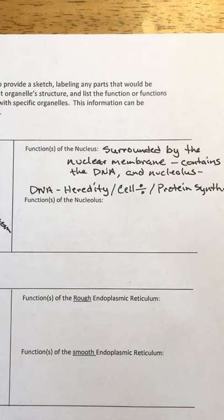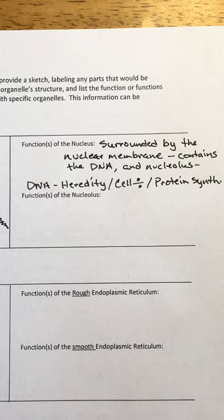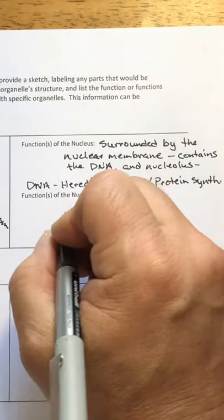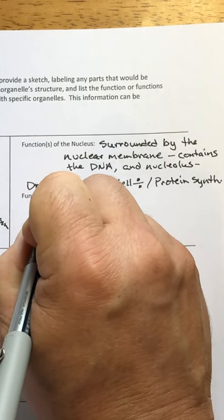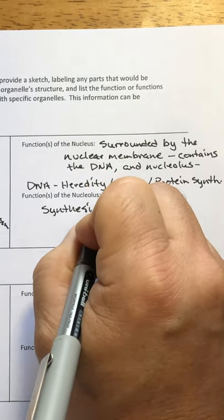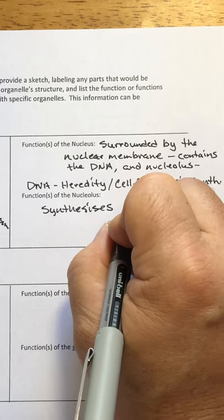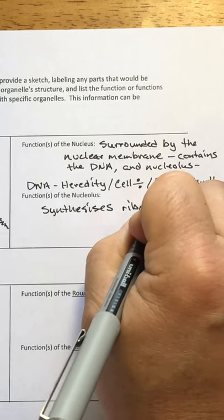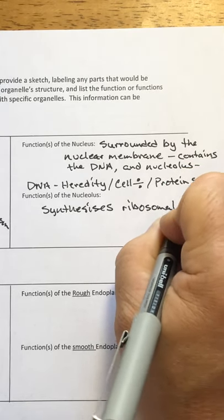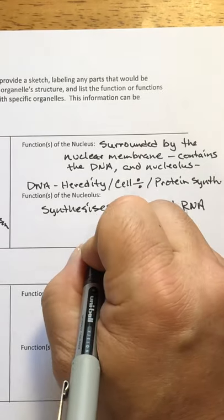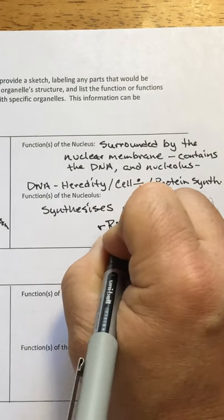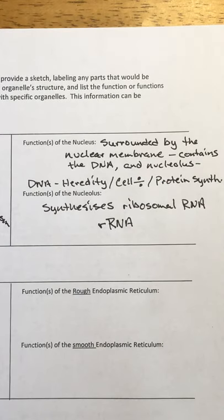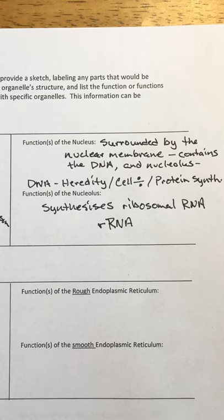DNA really controls those three major processes — heredity, cell division, and protein synthesis. The nucleolus makes a different type of nucleic acid — it makes RNA, but specifically ribosomal RNA. So it synthesizes ribosomal RNA, abbreviated as rRNA. There are three RNAs and we'll talk about those as we get into the unit on DNA and protein synthesis.